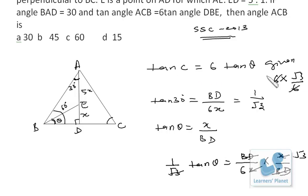If I put the value of tan theta over here, so I will be getting 6 into root 3 by 6, that means tan C is equal to root 3. Now tan C is root 3, that means C must be 60 degrees, because tan 60 degrees is root 3. So this angle that we have to find out, that is angle ACB is nothing but 60 degrees.